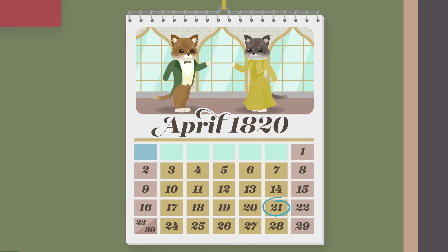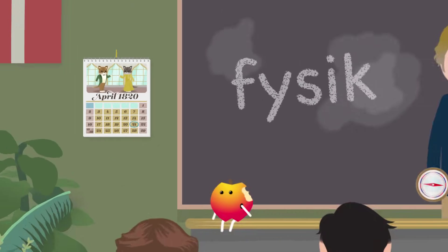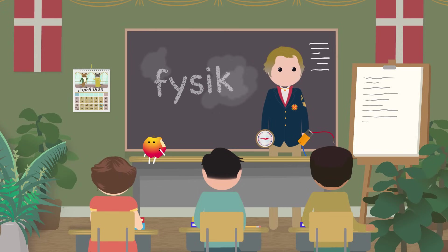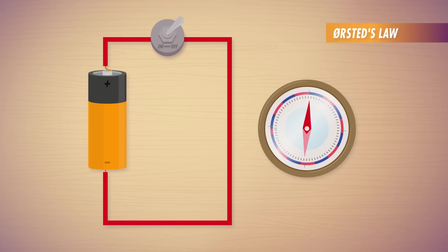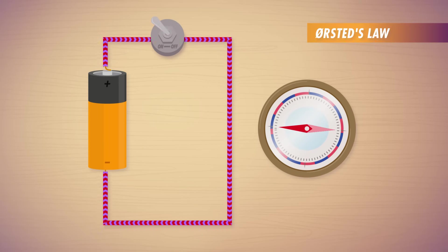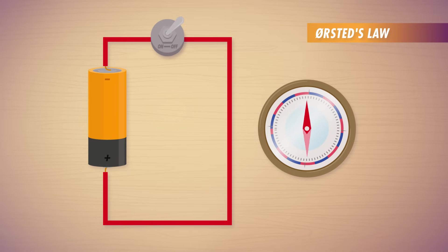It's Friday, April 21st, 1820. A physics professor in Denmark named Hans Christian Ørsted is in the middle of a lecture, using a compass and an electric wire for a demonstration. He turns on the current running through the wire and notices the needle in the compass starts to move. When he turns the current off, the needle moves back. Then he runs the current through the wire in the opposite direction and sees the needle move the other way. What Ørsted demonstrated that day was a fundamental discovery – the connection between electricity and magnetism. And it changed the field of physics forever.